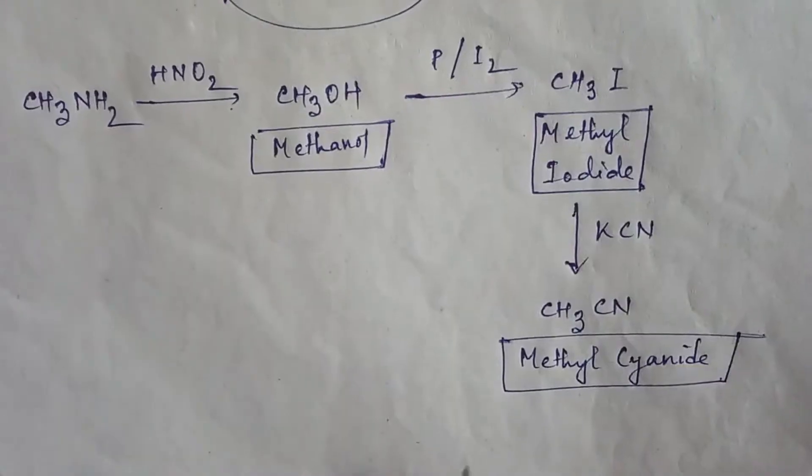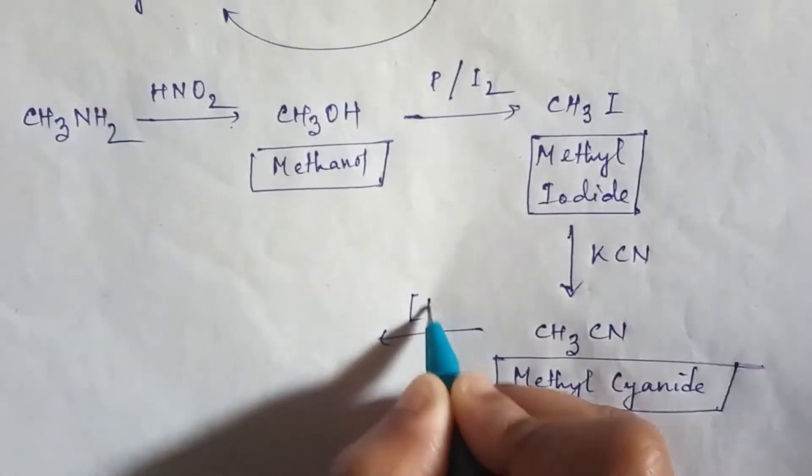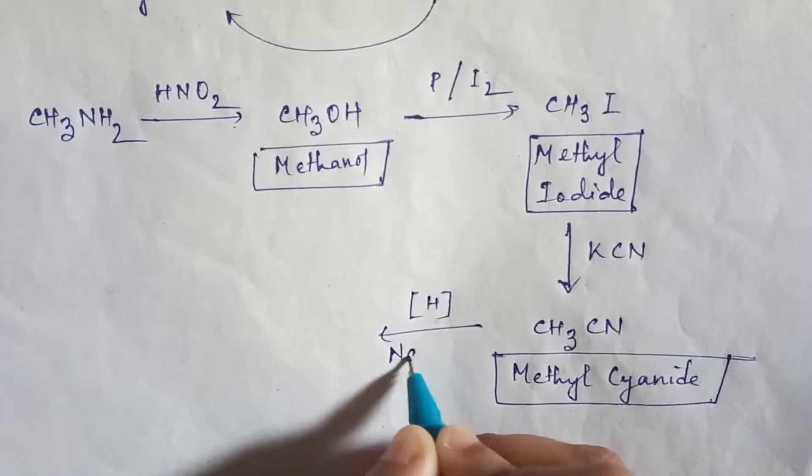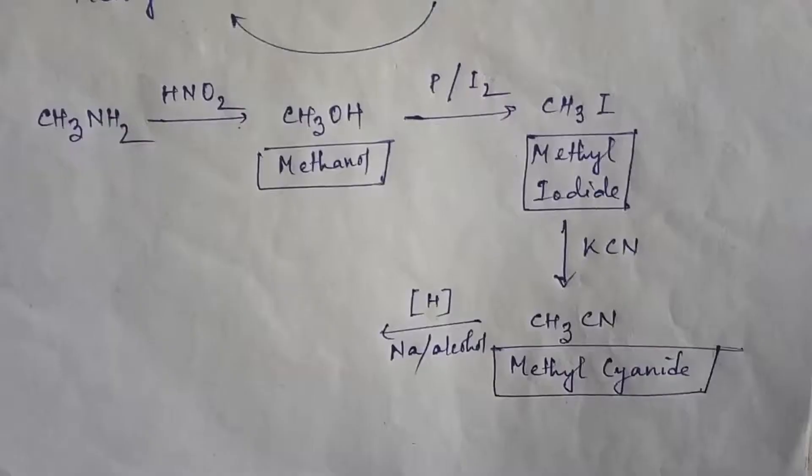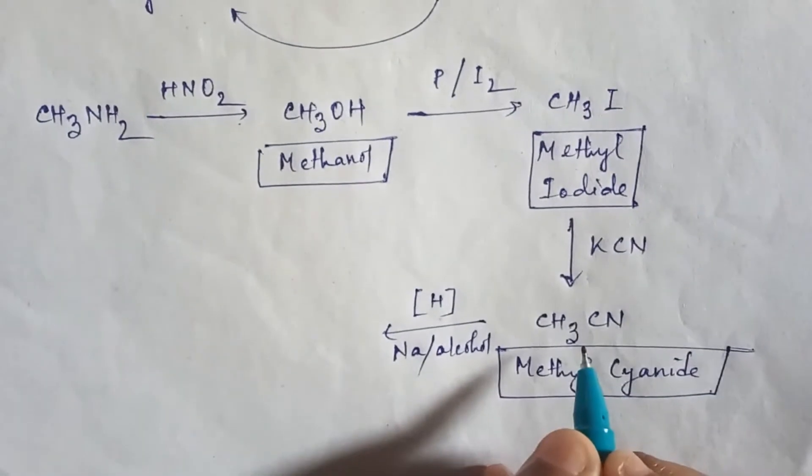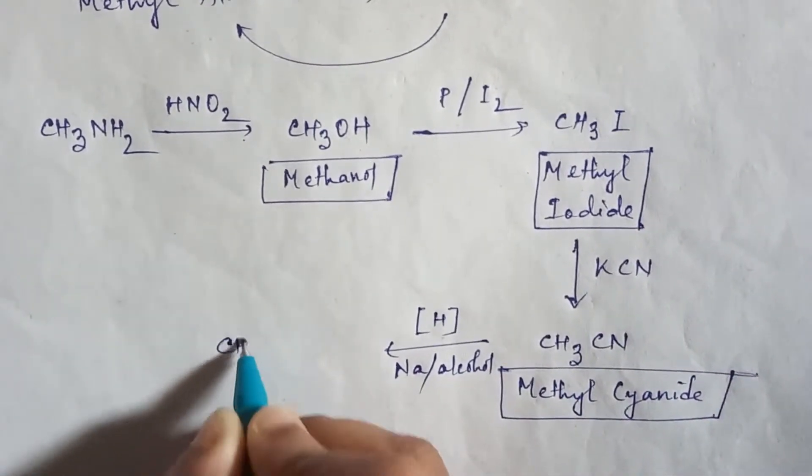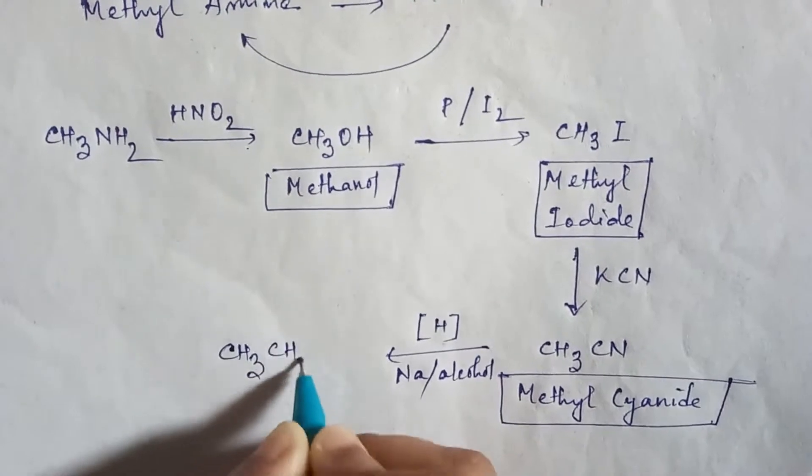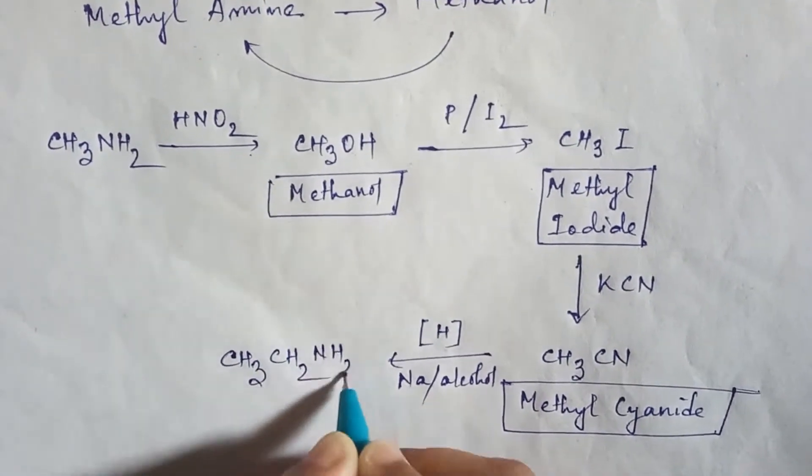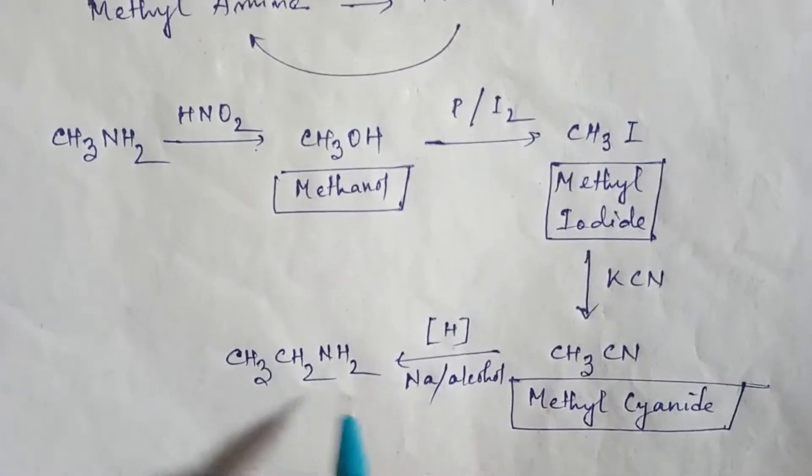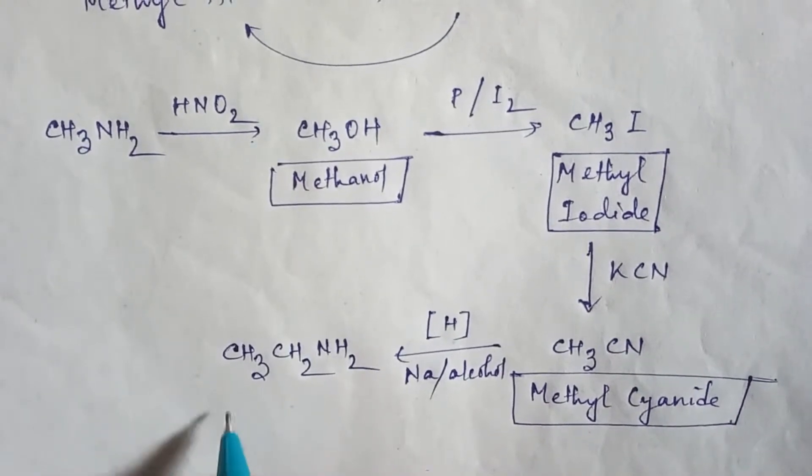Now if you do reduction in presence of sodium and alcohol, then hydrogen will be introduced and the product will be CH3CH2NH2, and the name of this compound is ethyl amine.